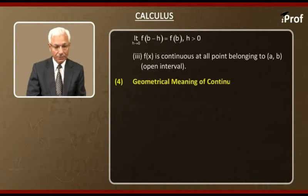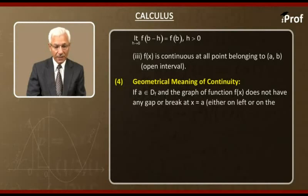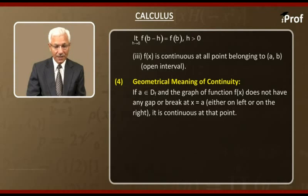Fourth point: Geometric meaning of continuity. If a belongs to the domain of f(x) and the graph of function f(x) does not have any gap or break at x equal to a, either on the left or on the right, it is continuous at that point.